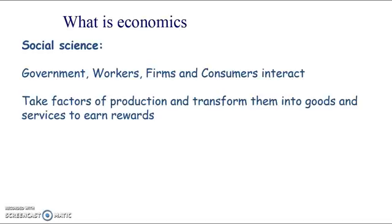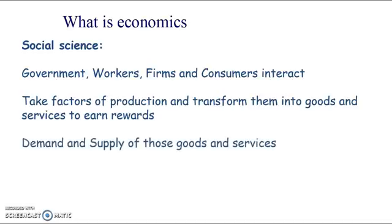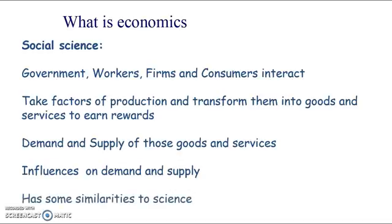We can also see the government producing some of these goods and services, and we also see the government intervening in these markets to try and encourage or discourage the production of some of these goods and services. We also look at the demand and the supply of these goods and services in economics — as you will know studying this course, that's a big section — and the influences that the government, firms, consumers and workers can have on demand and supply.